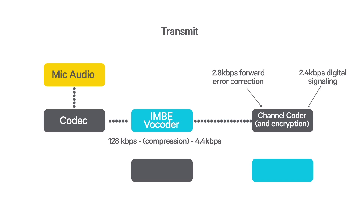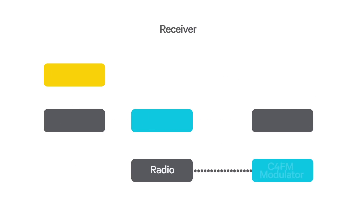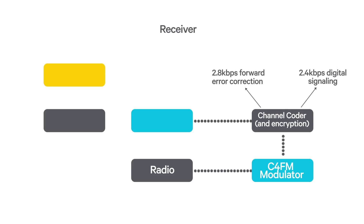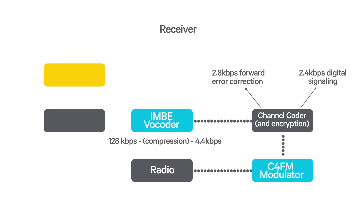In the P25 radio, a modem modulates the carrier with this digital data. In phase 1 P25, this is done using a modulation scheme known as C4FM. When receiving a P25 signal, the reverse of the transmit procedure takes place. The radio demodulates the signal and corrects any errors and extracts the signalling. The vocoder and the codec then reconstruct the original analog voice signal from the digital data. Because of the error correction and the fact that the transmission was digital, any noise picked up during the transmission does not appear in the reconstructed analog voice.